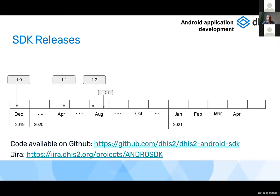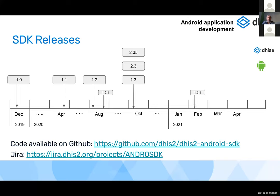A patch release is a new version that doesn't contain new features but mainly bug fixes and improvements. The current version is 1.3, which is being implemented by the current Android application 2.3 and is compatible with DHIS2 2.35.